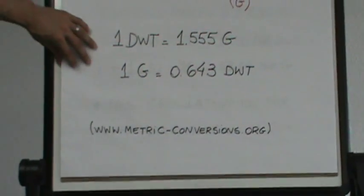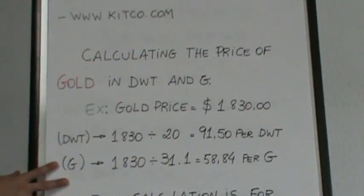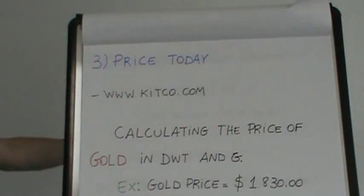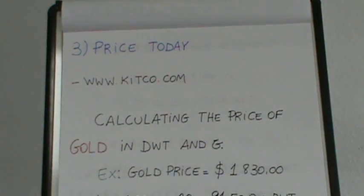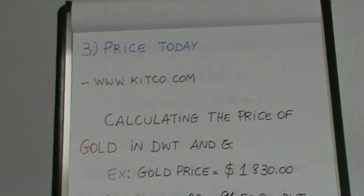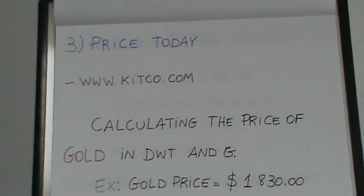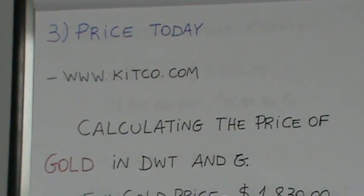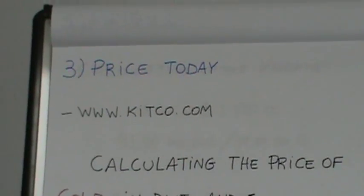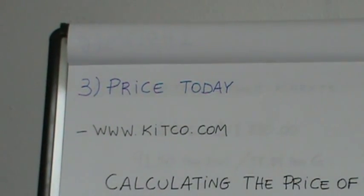And the third input is going to be the price. A lot of gold dealers use Kitco. It gives you a lot of prices in gold and silver. You can also check out CNBC or Bloomberg.